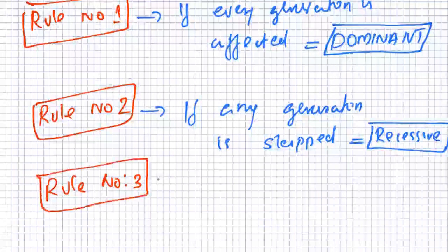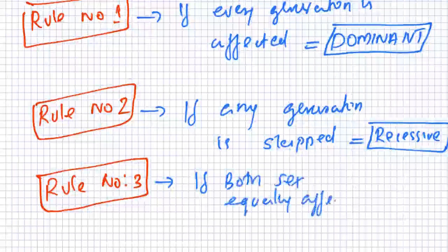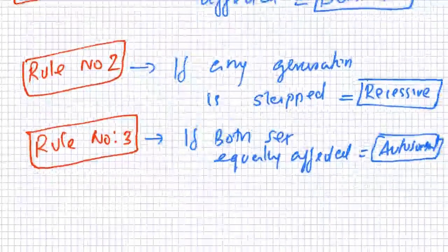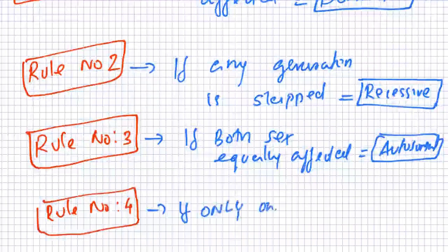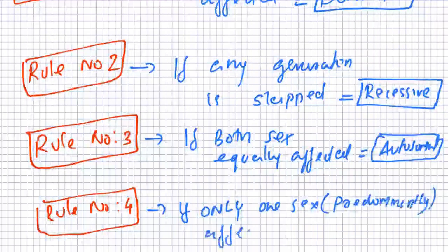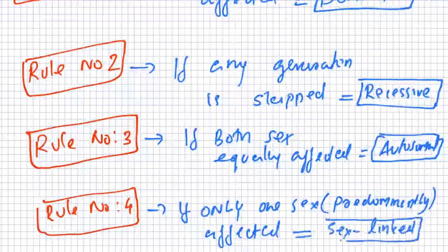Rule number three: if both sexes — male and female — are equally affected, that means it is autosomal; it is not X-linked. Rule number four: if only one sex, either male or female, is predominantly affected, that means it is a sex-linked disorder.